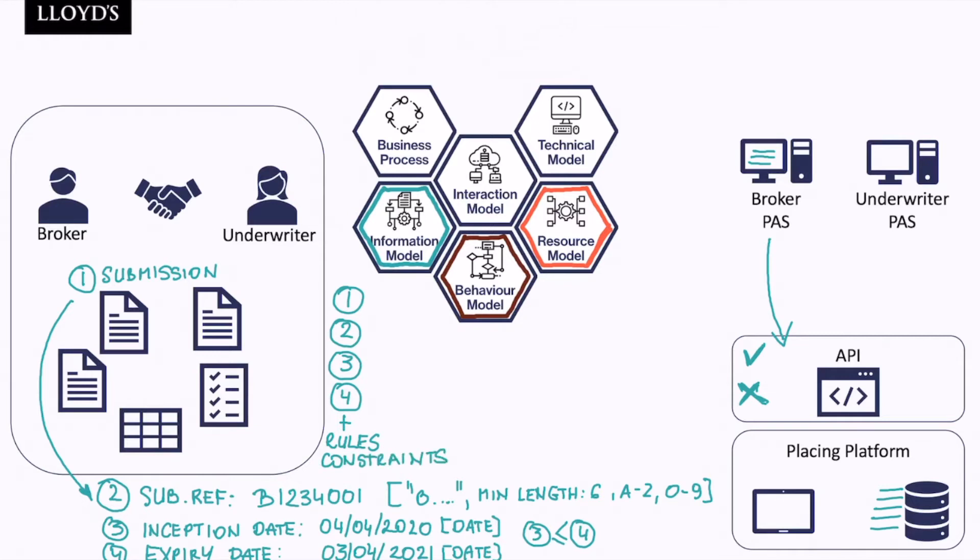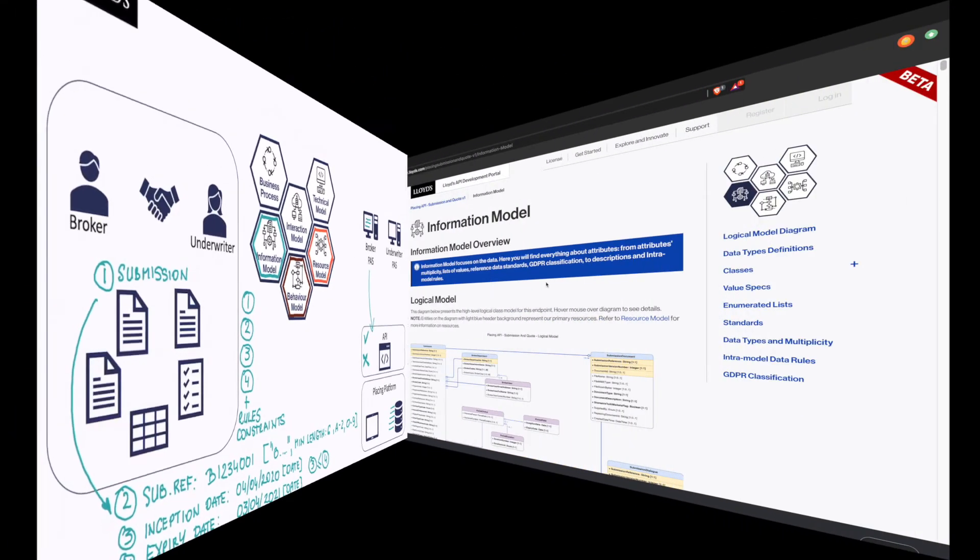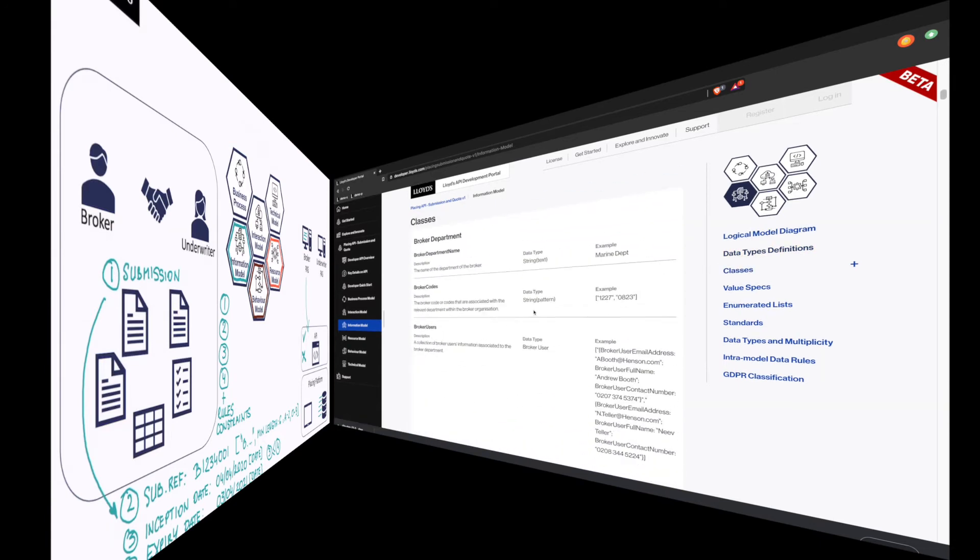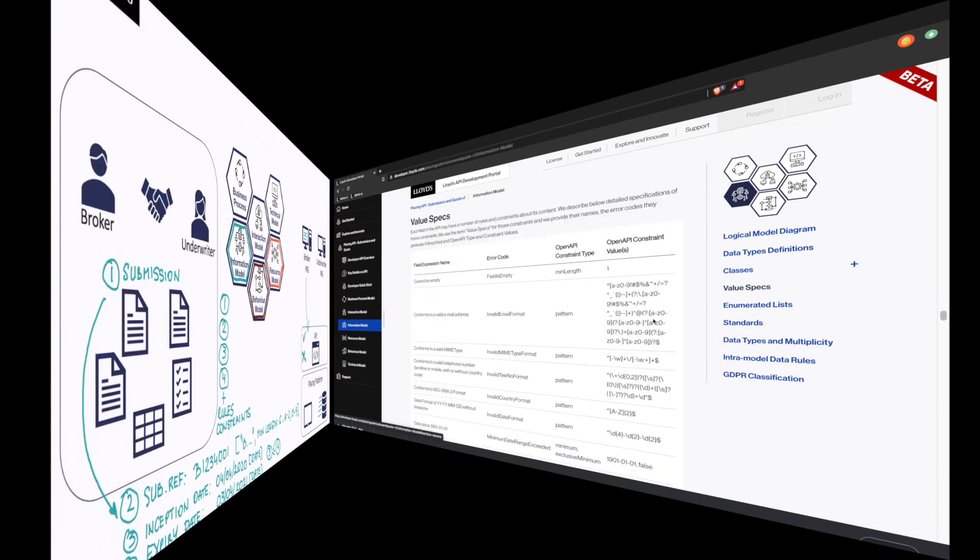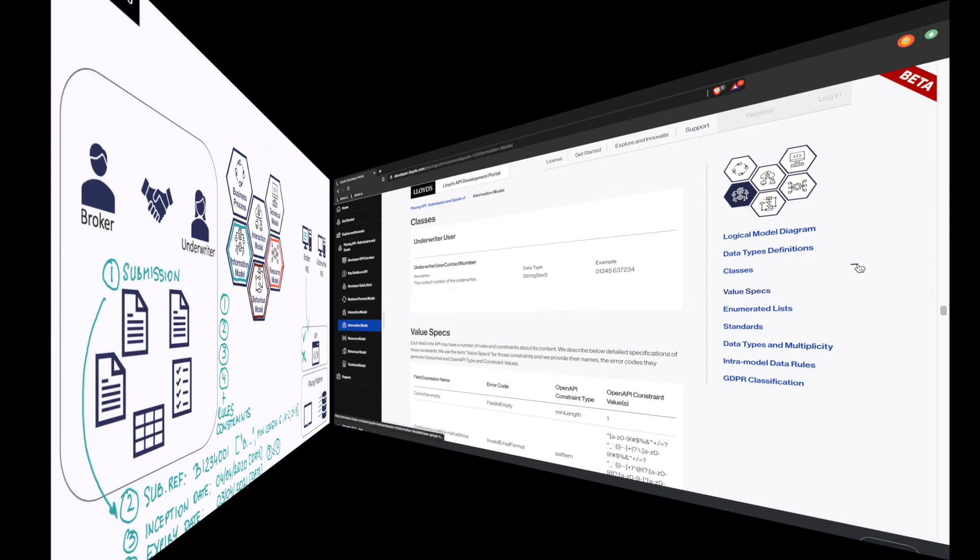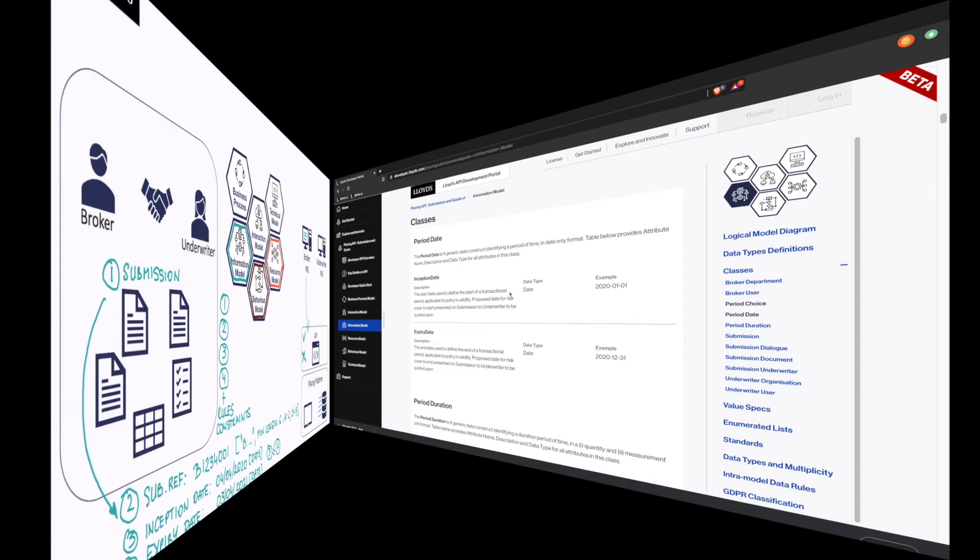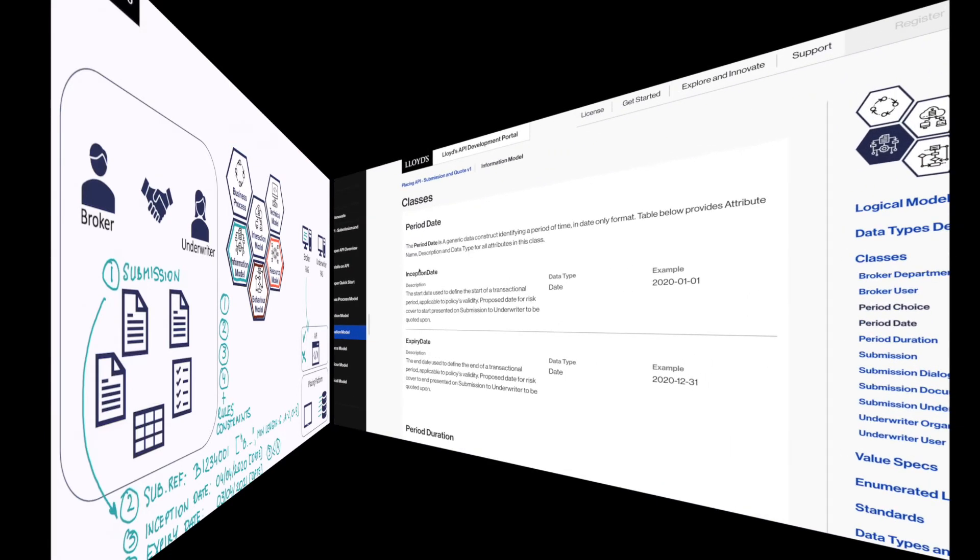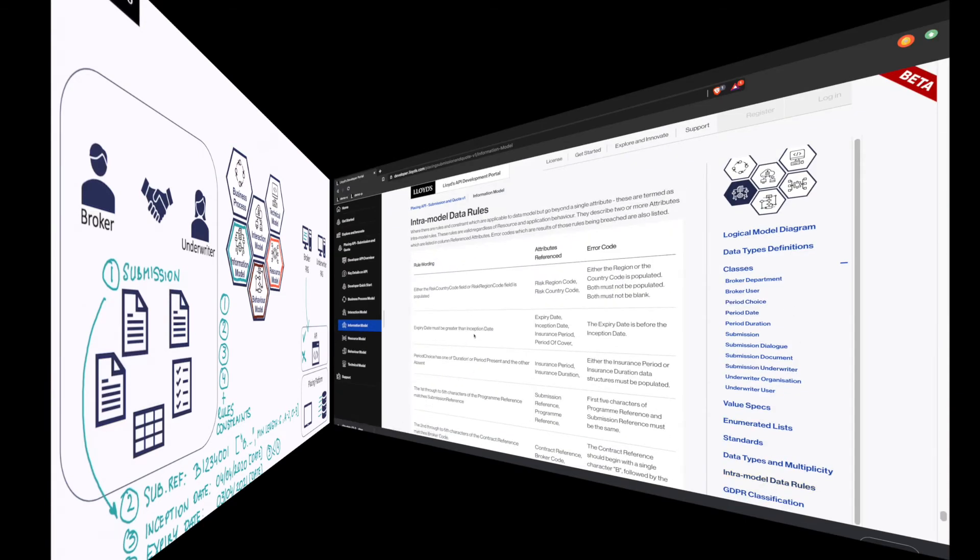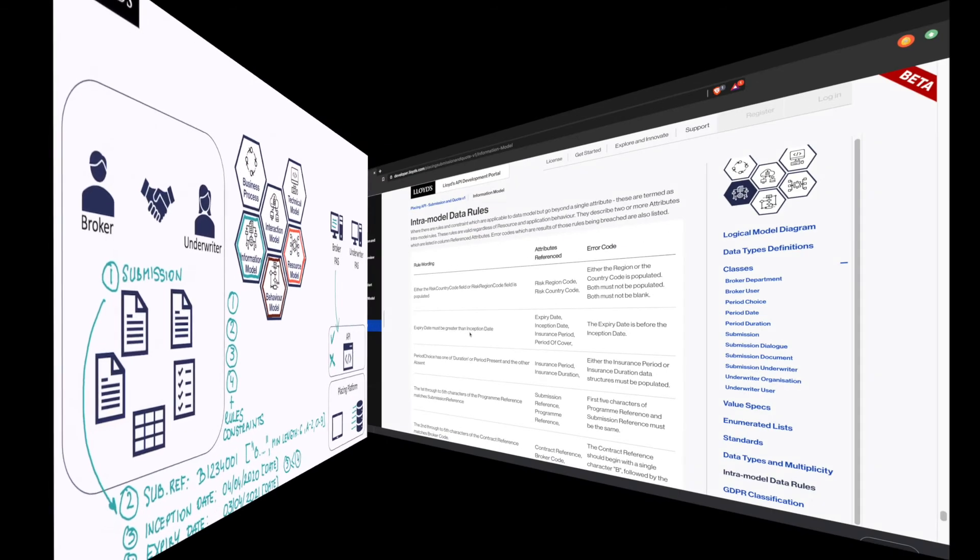Now all those details mentioned can be found in information model section of the portal. There we can actually see the value specifications which provide constraints on individual data elements. We can also explore the classes and individual attributes, and that includes the attribute descriptions, the data types and the examples. Here we have inception date and expiry date as well as intra-model rules where we bind more than one data attribute, like the expiry date is before the inception date.